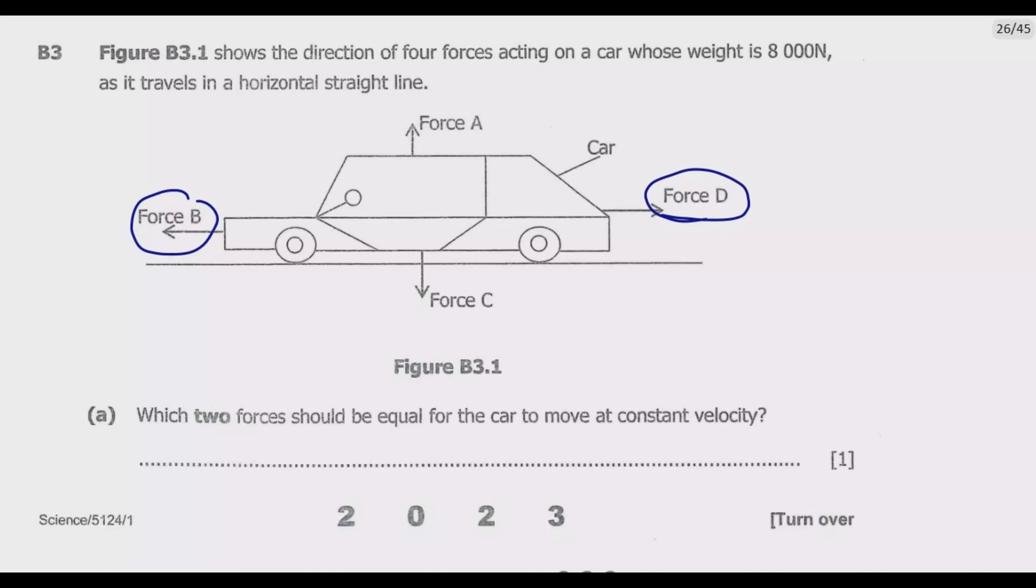This is because when an object moves at a constant velocity, the net force acting on it is zero, meaning that the forces acting in opposite directions are balanced. If not, the car will either accelerate if the driving force is greater, or decelerate if the resistive force is greater than the driving force. So the driving force B should be equal to the resistive force D.